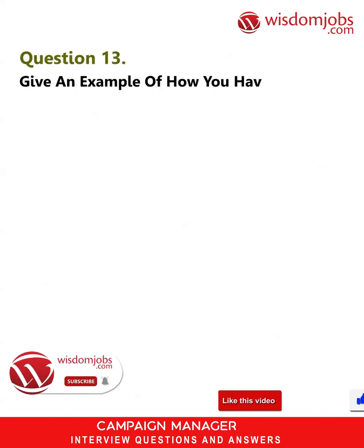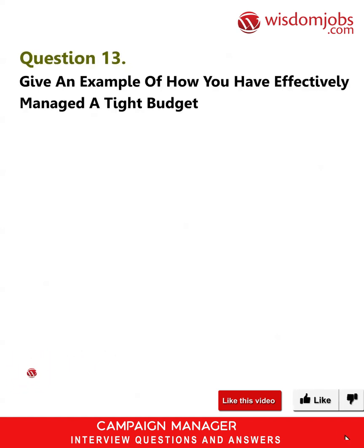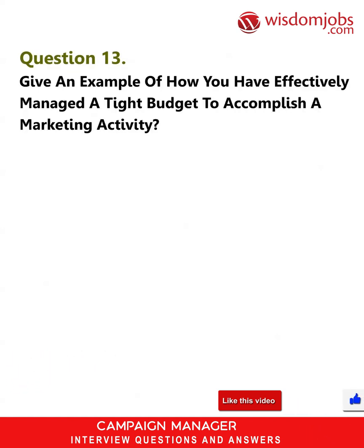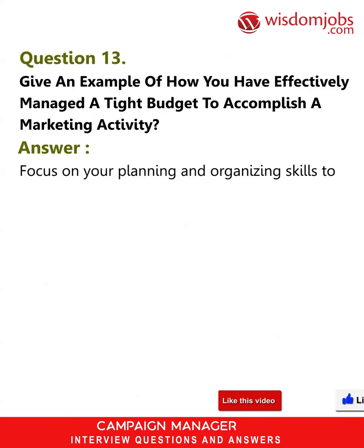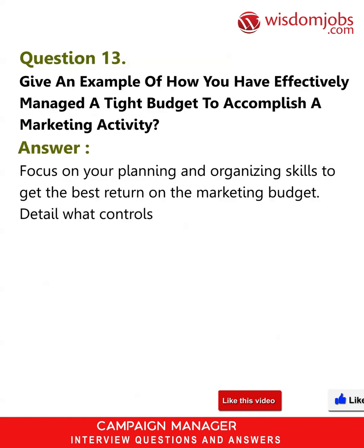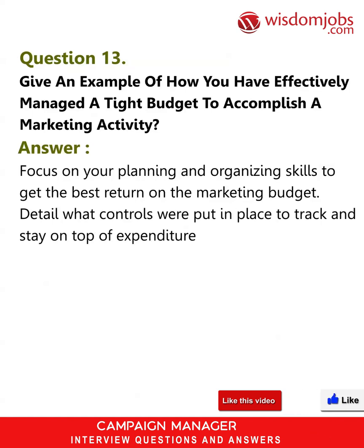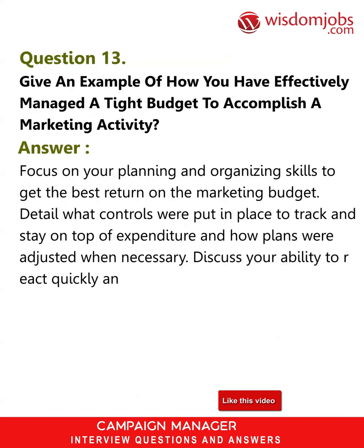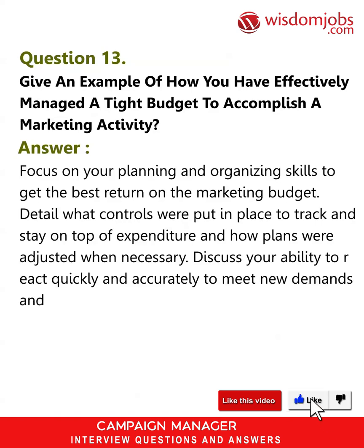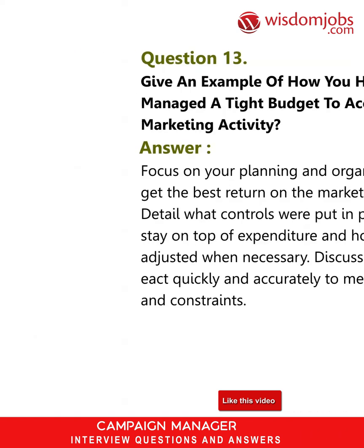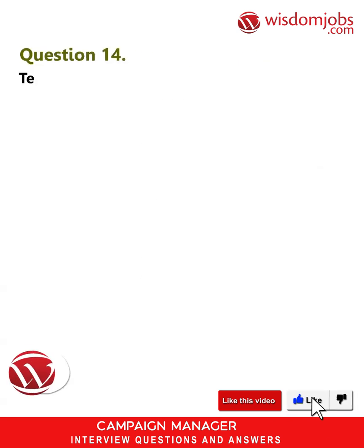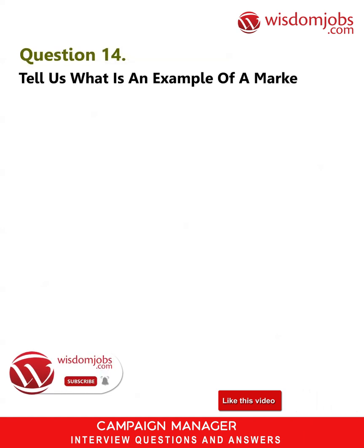Question 13: Give an example of how you have effectively managed a tight budget to accomplish a marketing activity. Answer: Focus on your planning and organizing skills to get the best return on the marketing budget. Detail what controls were put in place to track and stay on top of expenditure, and how plans were adjusted when necessary. Discuss your ability to react quickly and accurately to meet new demands and constraints.